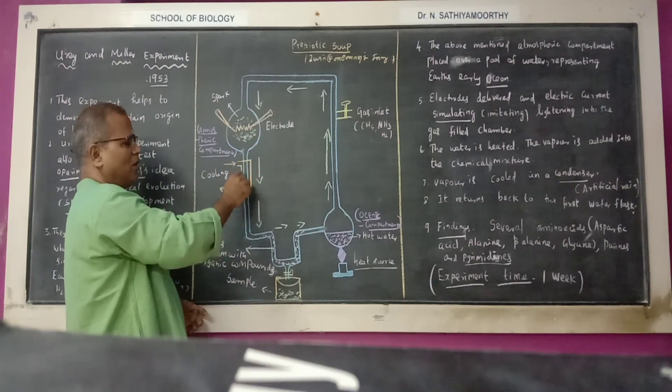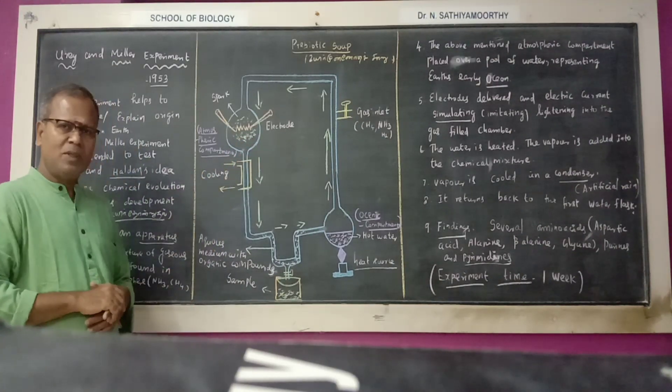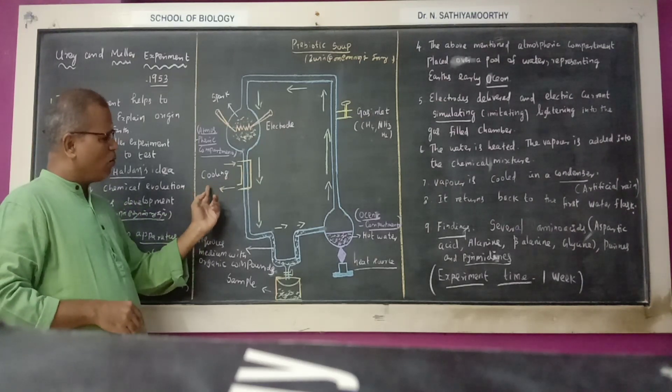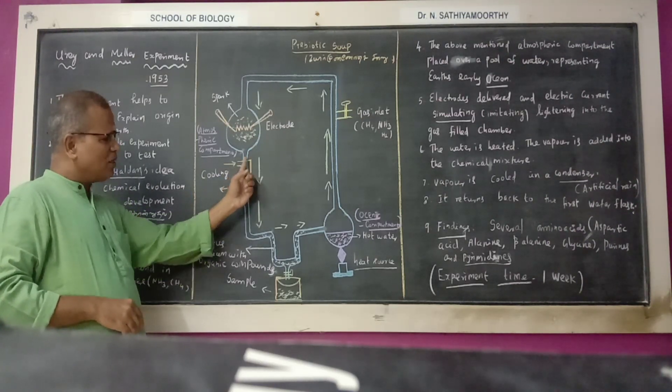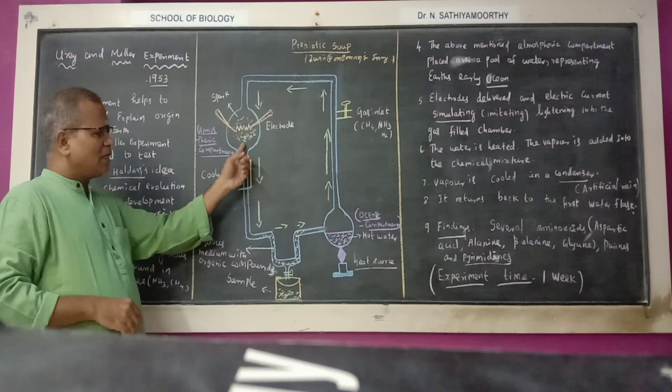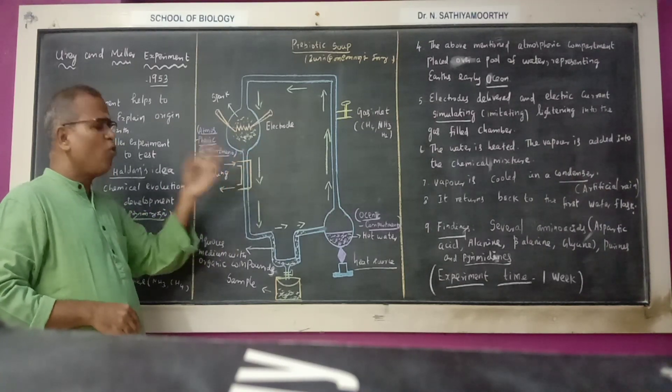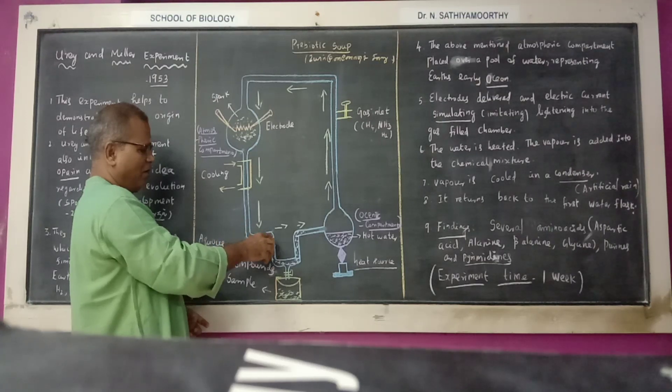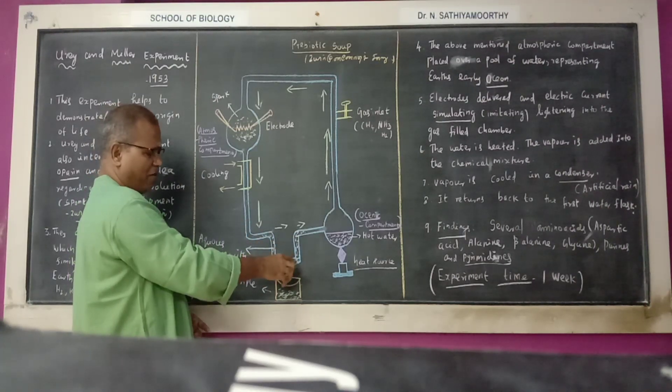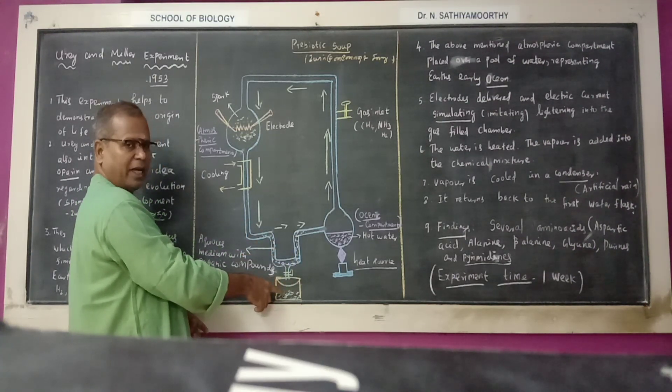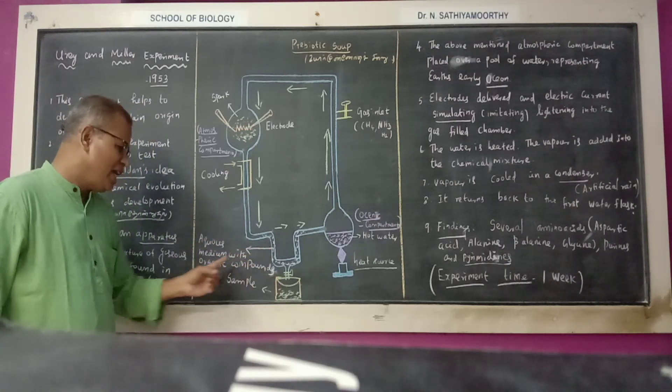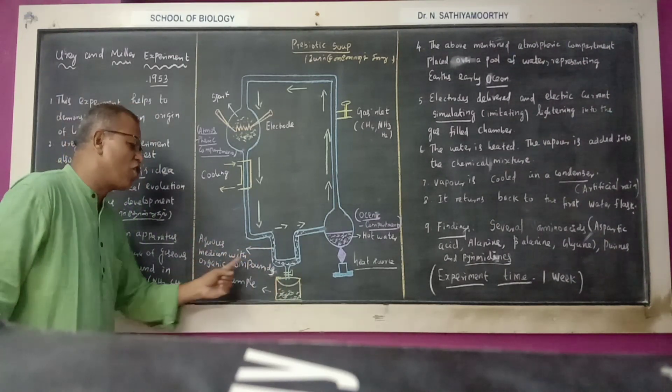In the tube, here it is cooled using a cooler, a condenser. So this area, substance comes out from this area is cooled here. In the cooler the substance is cooled. Finally it is collected here in a beaker. This area contains aqueous medium with organic compounds.